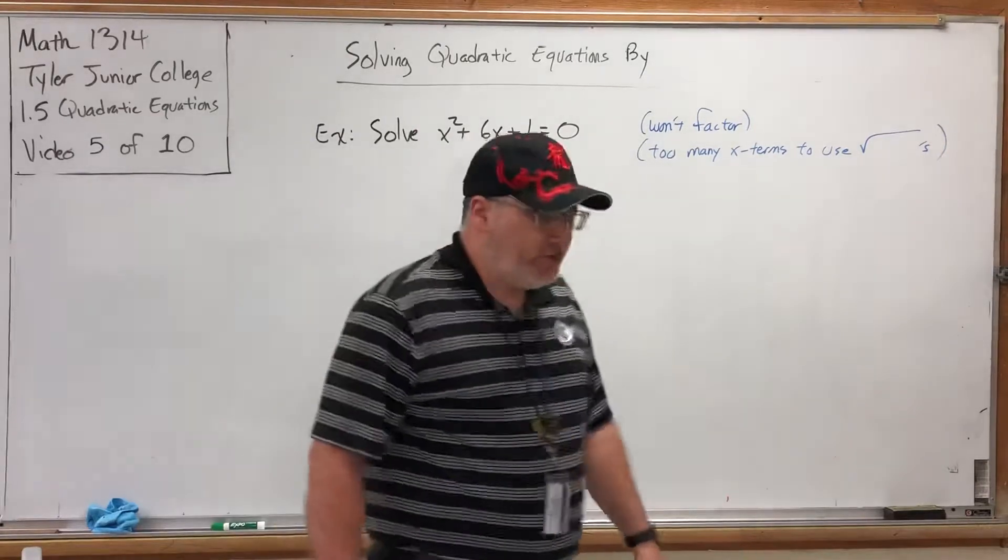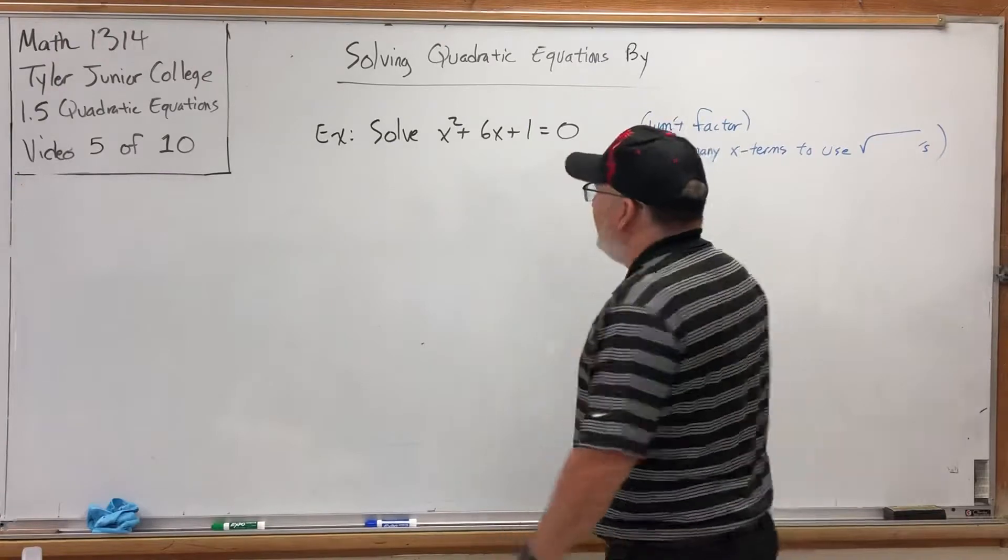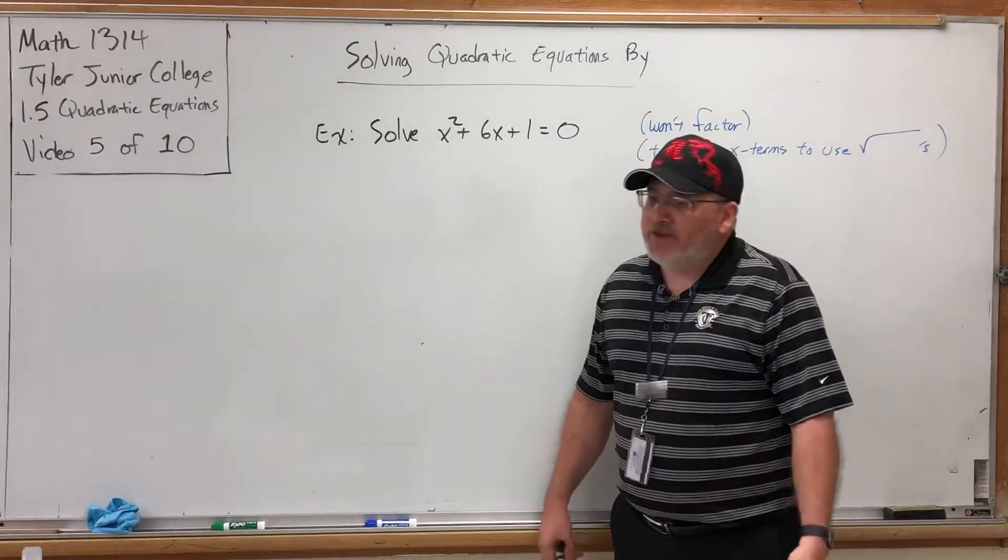The previous video concluded with a cliffhanger. Imagine that. The equation we were trying to solve was x squared plus 6x plus 1 equals 0, but we ran into a couple of problems.